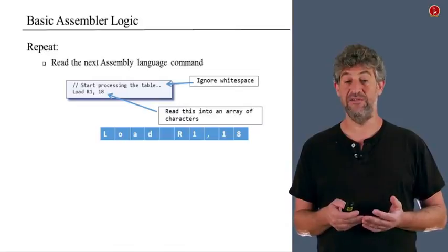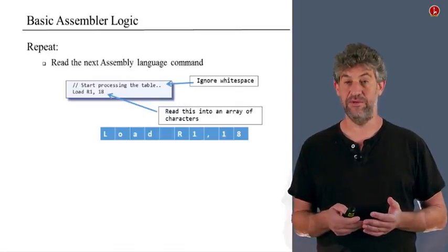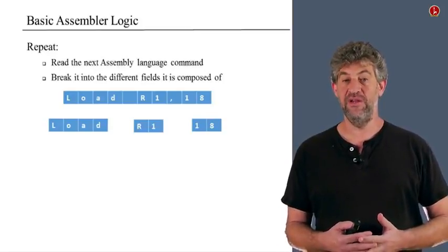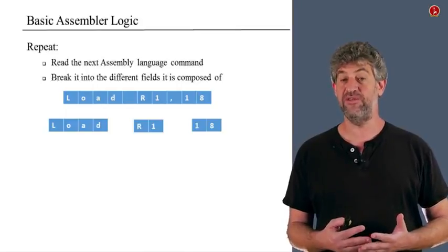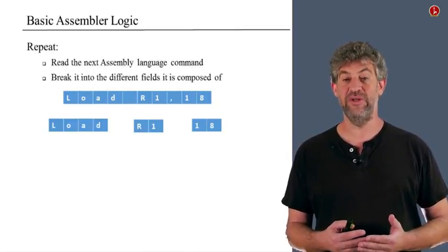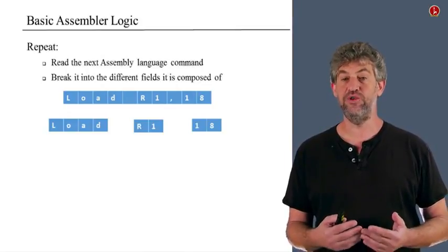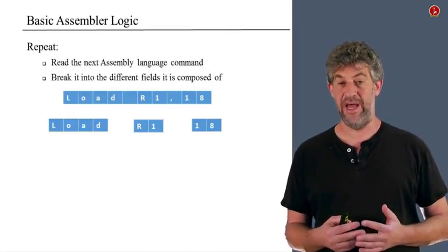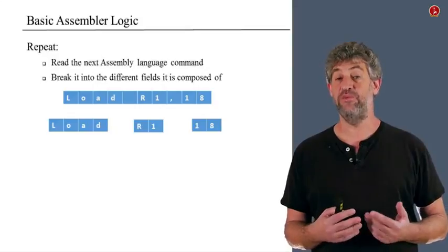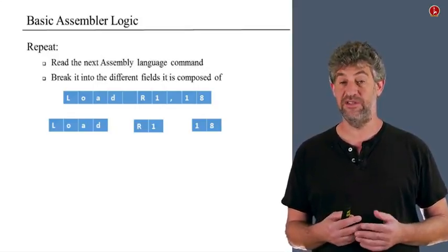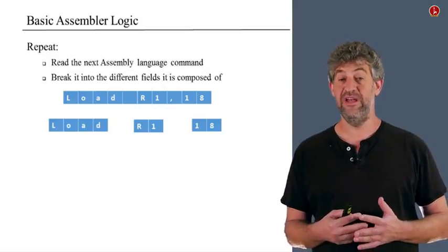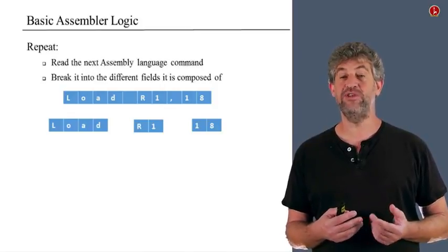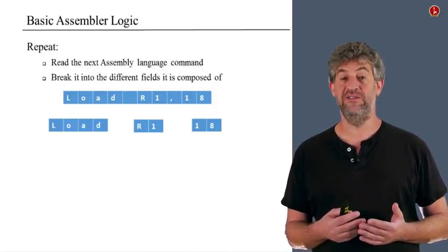The next step is taking that string of characters and breaking it into its different parts. Looking at "load R1 18", the different parts are: load (the first part), R1 (the second part), and 18 (the third part). There is also a space and a comma, but these are not the interesting parts — just syntax that helps us understand what's written. We need to break the original string into these three different substrings, the three interesting parts involved in this command.